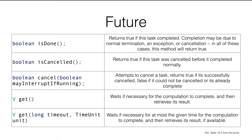The next method is isCancelled — this returns true if the task was cancelled before it completed normally. The third method is cancel, which attempts to cancel a task. It returns true if successfully cancelled, and false if it could not cancel it or if the task already finished.